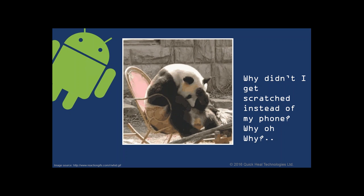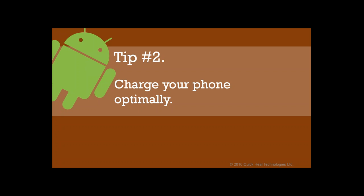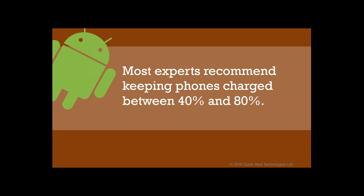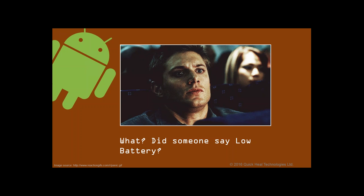Tip two: charge your phone optimally. A lot of people ask what exactly that means. Most experts recommend keeping your phone charged between 40% and 80%. Your phone should always show a battery level between 40% and 80% — don't keep it always above 80% or below 40%. Most people live in fear of running out of battery juice.